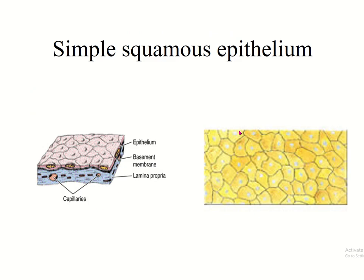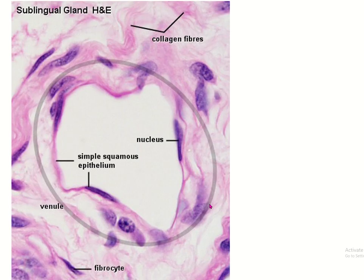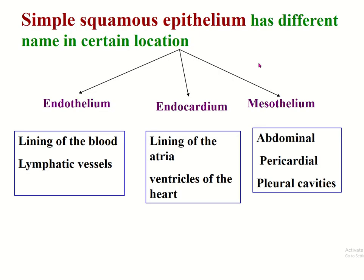Simple squamous epithelium: from a superior view, cells look flat. In cross-section, it appears as flattened cells with flattened nuclei. In a histological slide, this epithelium is difficult to see because only the flattened nuclei are sometimes observed; the cytoplasm is so thin it is difficult to identify.